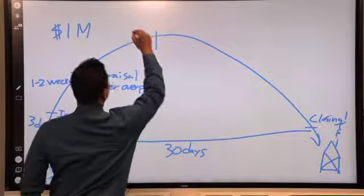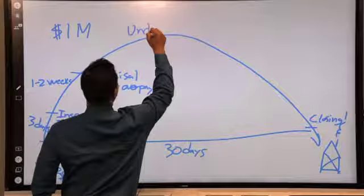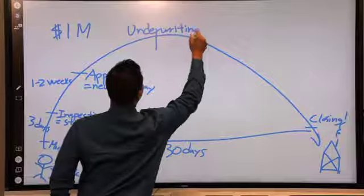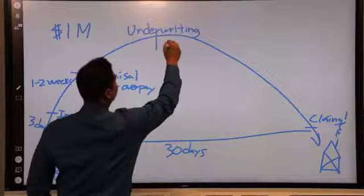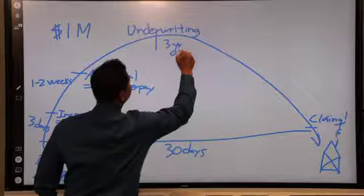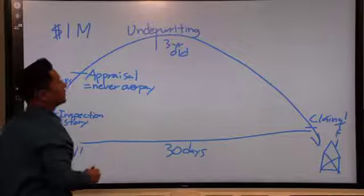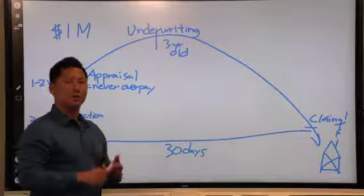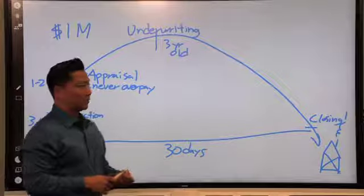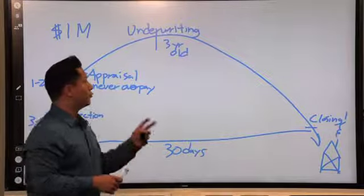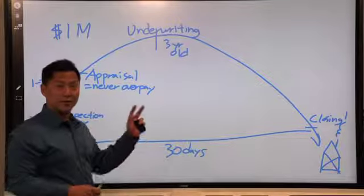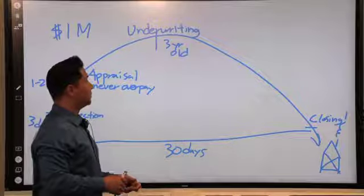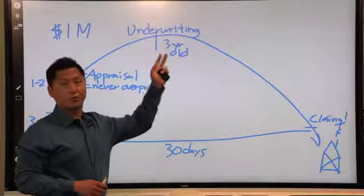Then, you get to underwriting. Underwriting is what I call a three-year-old. A three-year-old basically asks a lot of questions about why things are, why you bought this, where did this money come from. We never ever recommend buying a car or furniture within this process, unless you talk to me or the lender first.